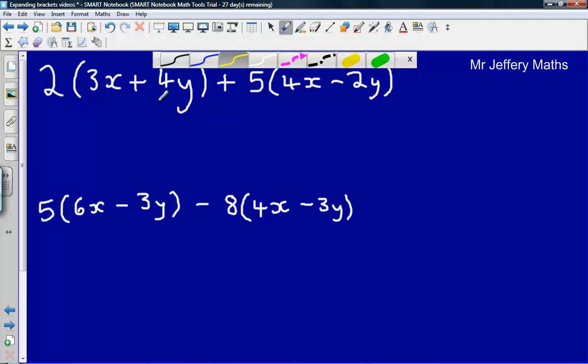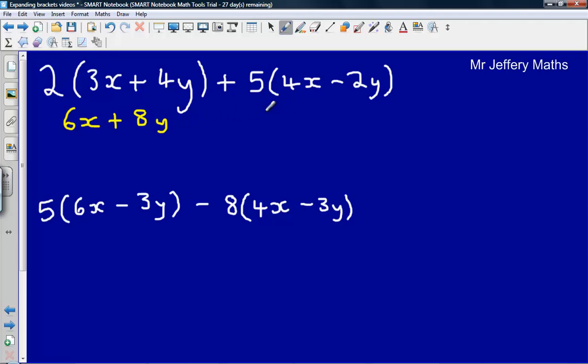First step here is we need to multiply out each of these brackets. So we'll start with this one. 2 multiplied by 3x leaves us with 6x, and then 2 multiplied by 4y leaves us with 8y. Then we'll expand this bracket here. So we've got plus 5 multiplied by 4x, that leaves us with plus 20x.